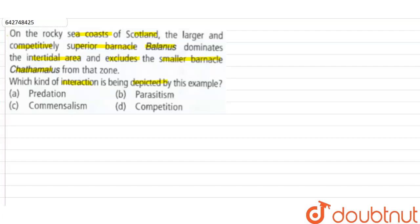In the question itself they have given us the answer. Competitively superior barnacle means that competition exists between these two species, and the one which is superior or has the upper hand in this competition is the larger barnacle or Balanus. Now when this experiment concerning these two barnacles was carried out on the coast of Scotland...